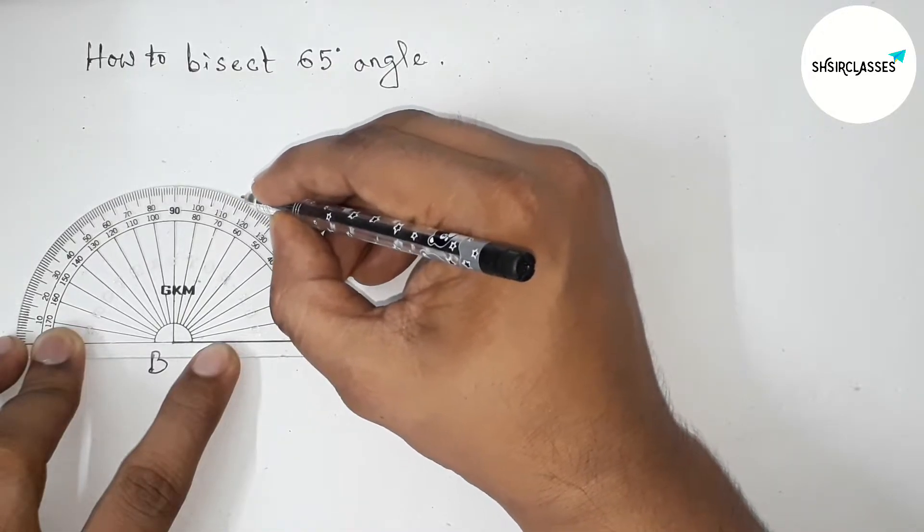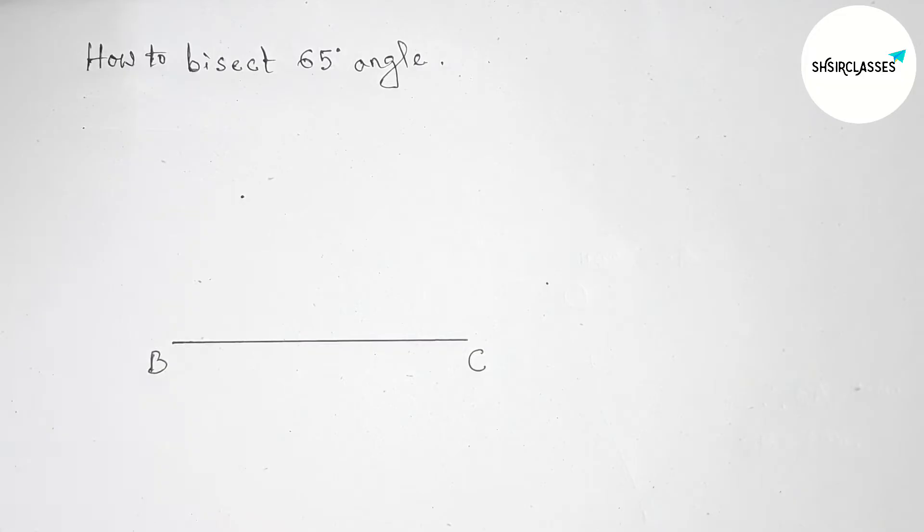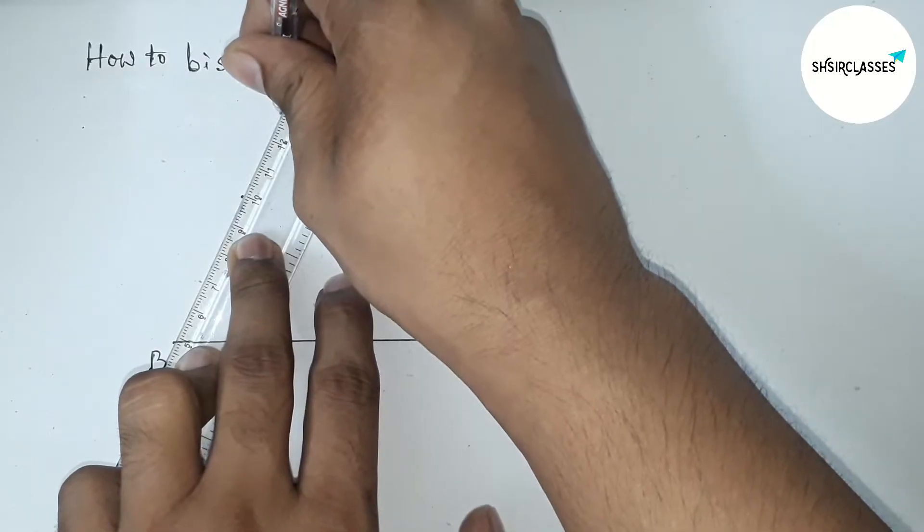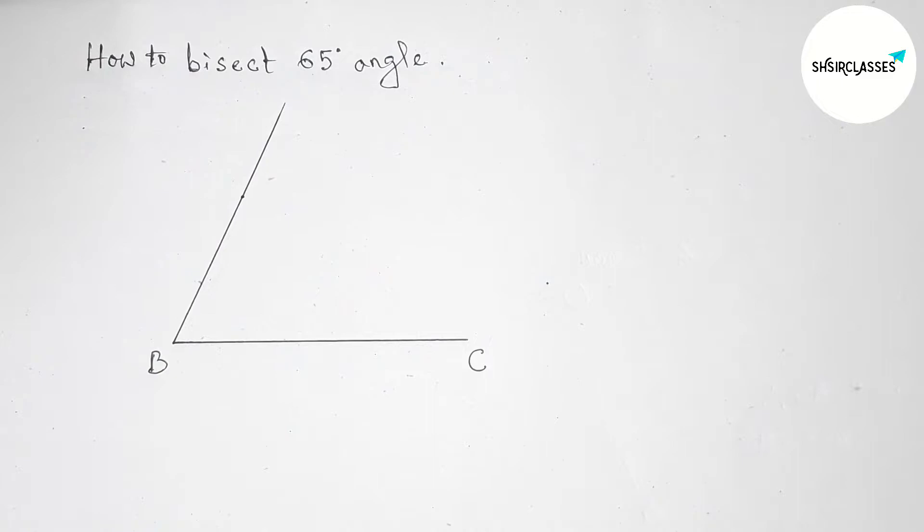This is the 65-degree angle. Now joining this line to get a 65-degree angle, and taking point A here.